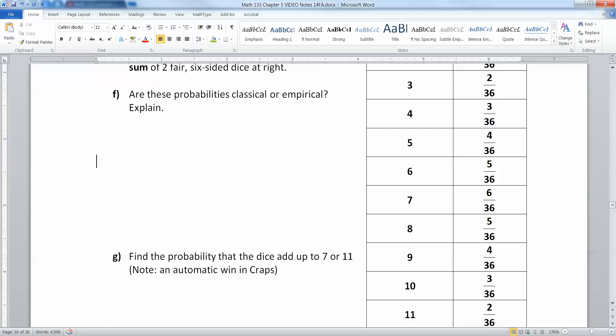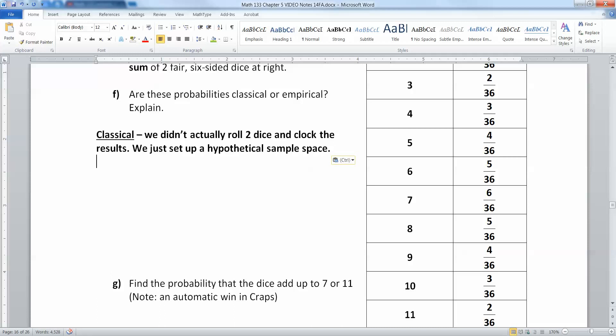Now, are these classical or empirical probabilities? Well, these are very much classical probabilities. We didn't roll the dice and figure this out. We just kind of set up a hypothetical sample space. So that would be classical for sure.